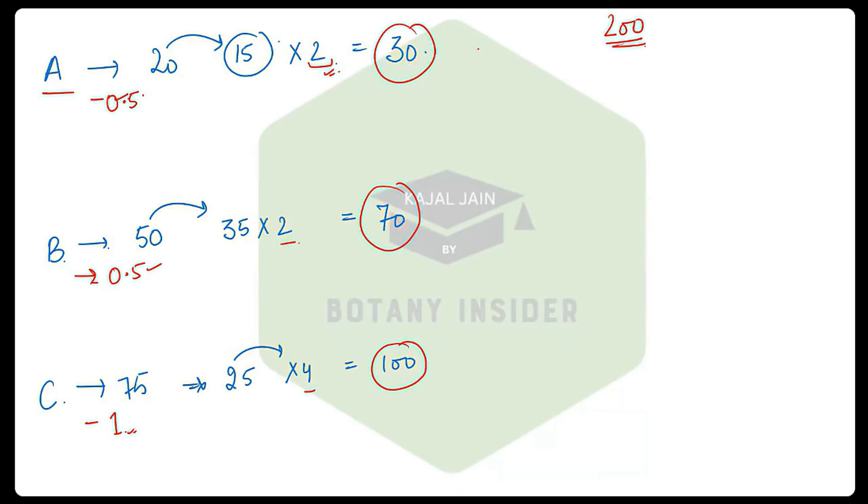Now understand what should be your safe range for the number of questions to be attempted. In Part A, have a target of solving at least 8 to 10 questions. If you have practiced your Part A properly, then solving 10 questions from the 20 questions, you can easily get 10 questions.